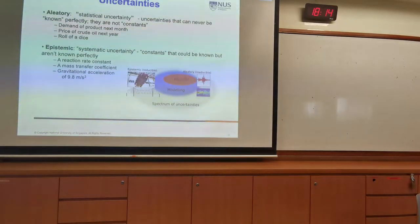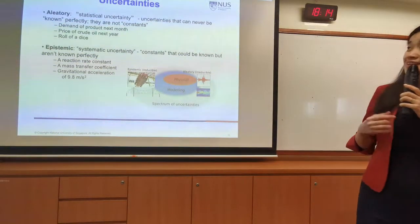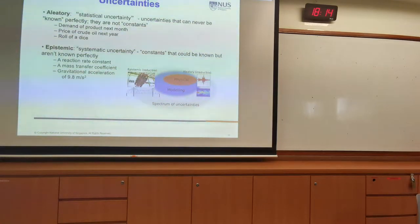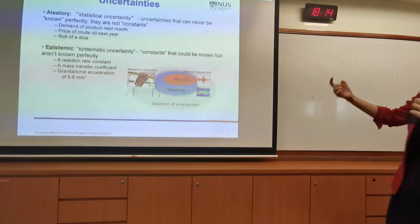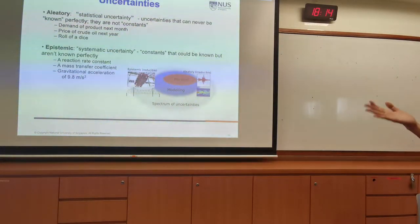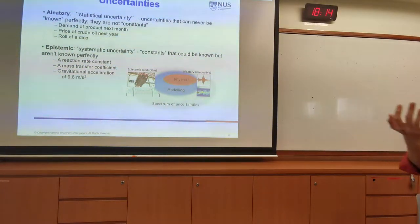Examples of aleatoric uncertainty include: what is the demand of the product next month, or what is the price of crude oil? These are uncertainties that can never be known perfectly — we have to make estimations. They are not constants; you have to estimate and forecast those uncertainties.